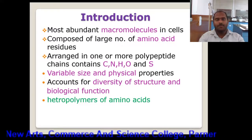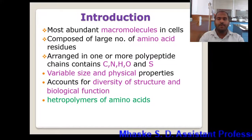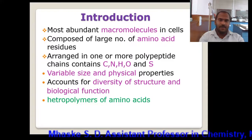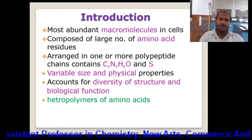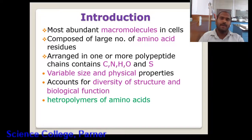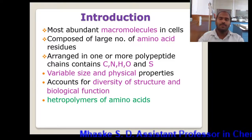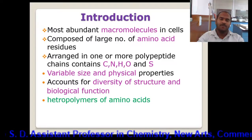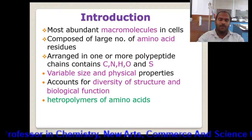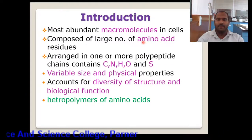The most abundant molecule on earth or in any medium is the protein molecule, which is a macro molecule in the cell, composed of a large number of amino acids. In the previous lecture we have seen that amino acids join due to the formation of a polypeptide chain. When a large number of amino acids are joined, that results in the formation of a polypeptide chain or a large molecule of protein. So in a protein we can say that there is a presence of an amino acid.